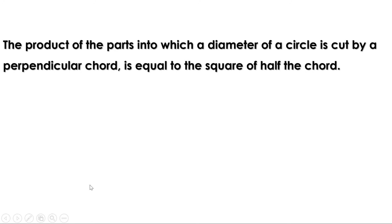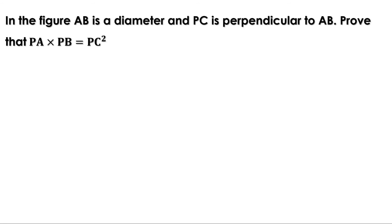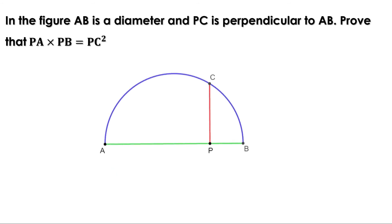That means the product of the parts into which a diameter of a circle is cut by a perpendicular chord is equal to the square of half the chord. This is a very important result. Sometimes it may be asked like this: in the figure, AB is a diameter and PC is perpendicular to AB — prove that PA into PB equal to PC square.